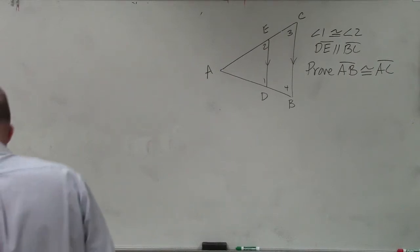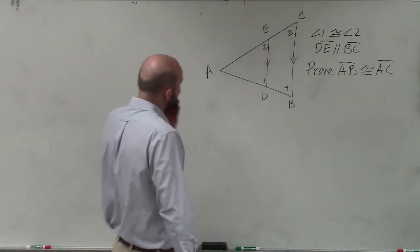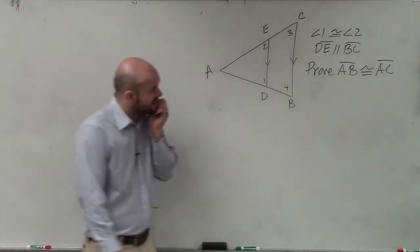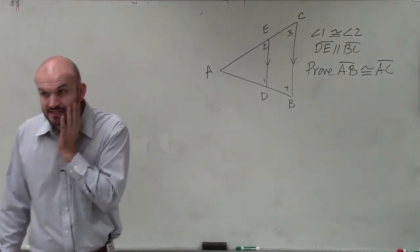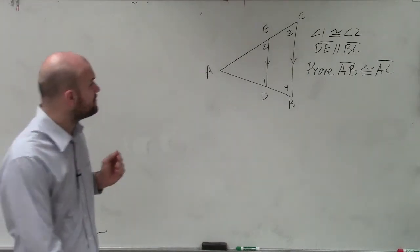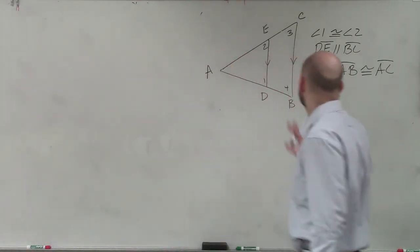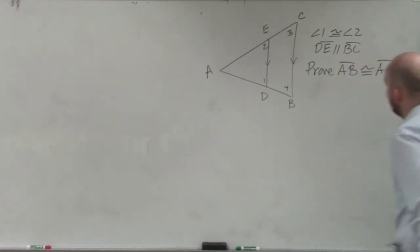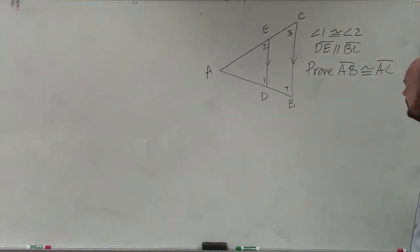So this is number 10 on page 54. What we have in this case is they want us to prove that line AB is congruent to line AC.